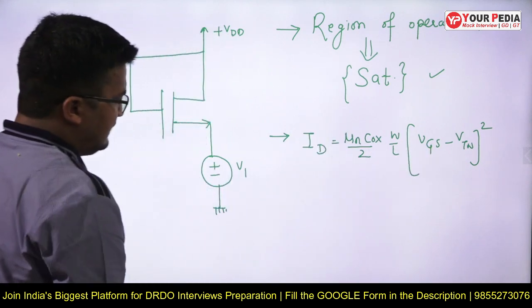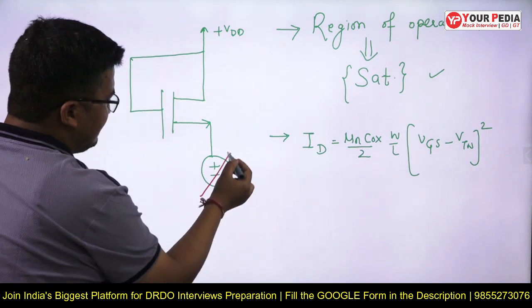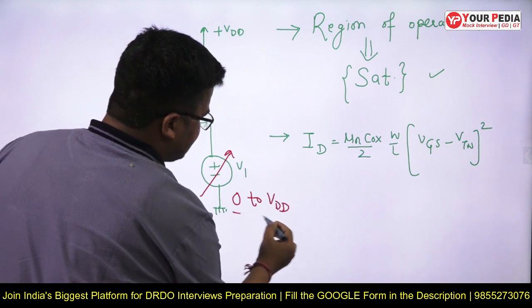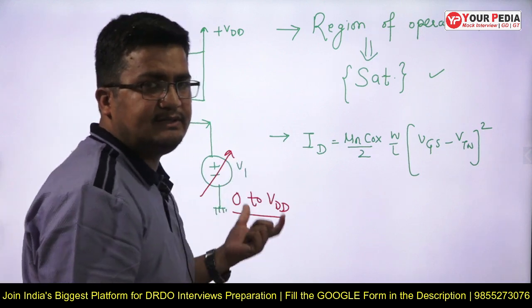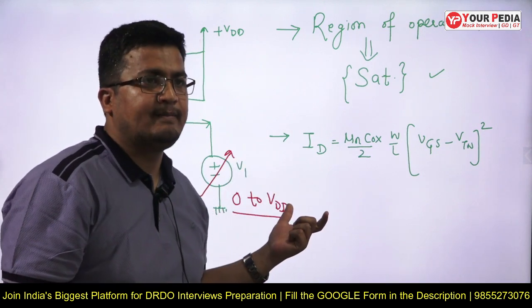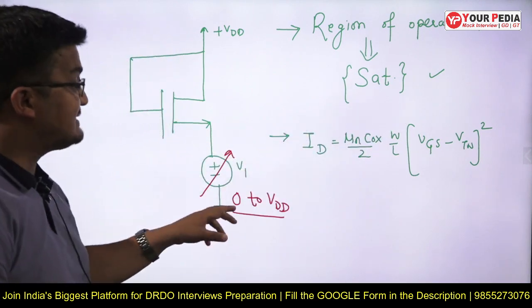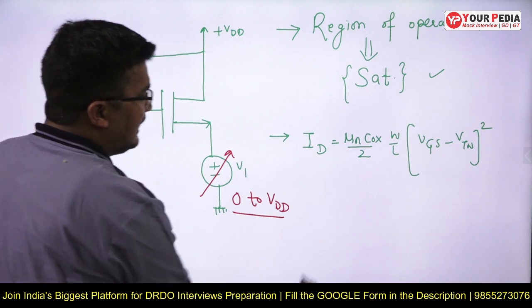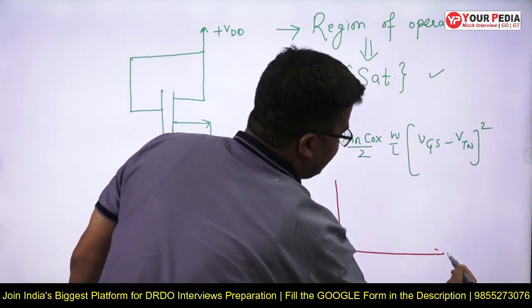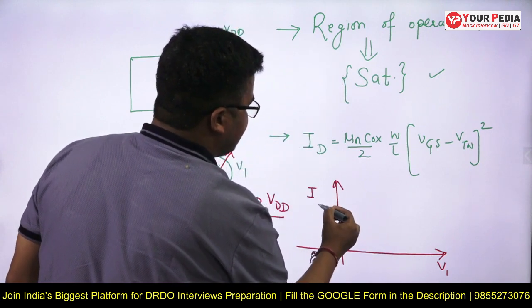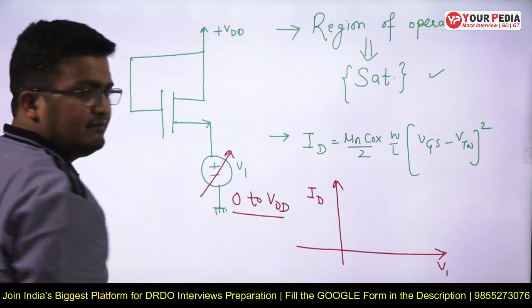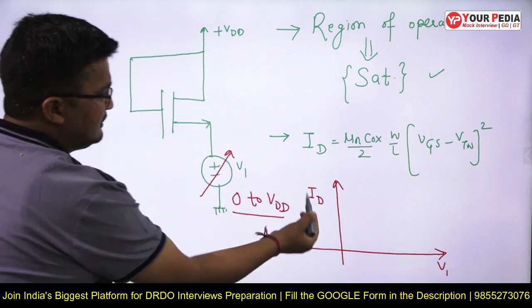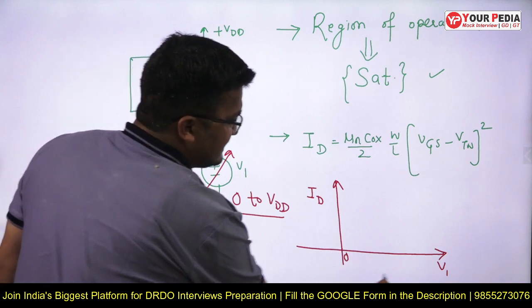Now the next step: make V_1 variable and assume it is varying from 0 to V_DD. This is the next, more difficult level — very tough for most students to figure out. On the x-axis consider V_1 and on the y-axis consider drain current. Can you tell me, if V_1 is varying from 0 to V_DD, what will this graph look like? What will be the variation of the drain current if I vary V_1 from 0 to V_DD? So starting from 0, somewhere here will be V_DD.